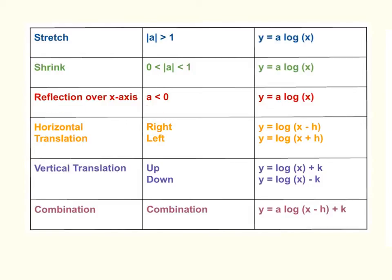The other translations are basically just moving up, down, right, or left. If you are adding or subtracting inside the parentheses — so adding or subtracting from the variable x — it will move the graph right or left. It's a little different than what you might think: if you're subtracting, it moves right; if you're adding, it moves left. For vertical translations, if you add or subtract a value after you evaluate the logarithm, adding moves it up and subtracting moves it down. You can also have a combination of any of these translations.